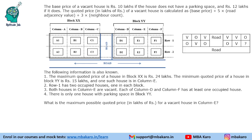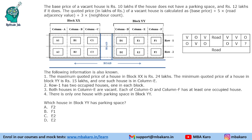Question 4: What is the maximum possible quoted price of a vacant house in column E? Column E has no parking (only one parking space in block Y, which belongs to E1). Base price = ₹10 lakhs, plus ₹5 for road, plus ₹3 for one occupied neighbor (F1 is occupied). If D2 is also occupied, that adds another ₹3 lakhs. So the maximum price is ₹10 + ₹5 + ₹3 + ₹3 = ₹21 lakhs. Question 5: Which house in block Y has a parking space? The answer is E1.